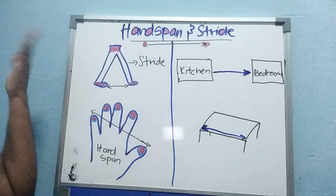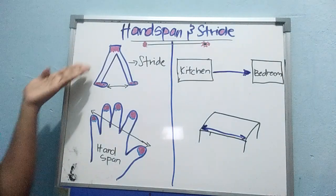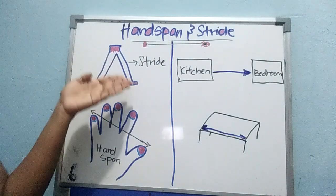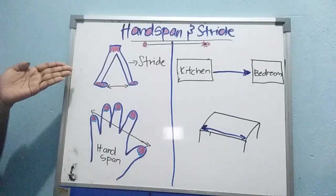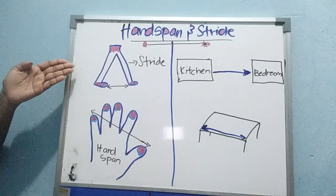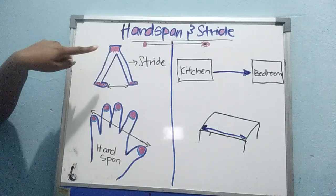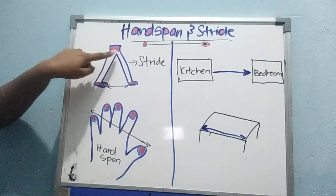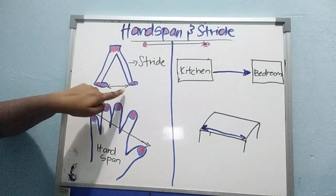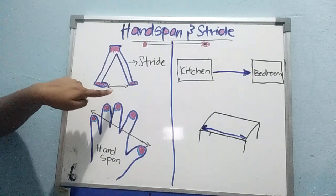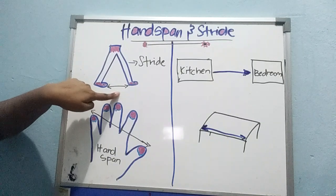First, let's look at this. What is this? Our legs — our two legs. This is the pose when you are standing and walking somewhere. Now, what is stride? This is your right leg, this is your left leg. When you walk, there will be a gap between your both legs. This is called stride.